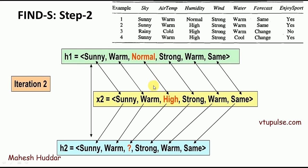In the second iteration, we consider the second example. We compare the attribute values of the hypothesis with the current example. Sunny matches with Sunny, so it is kept as is. Warm matches with Warm, so it is kept. Normal and High do not match, so we put the next general value — question mark — because it must match both Normal and High. Strong matches Strong. Warm matches Warm. Same matches Same. So no further replacements are needed. This completes the second iteration.